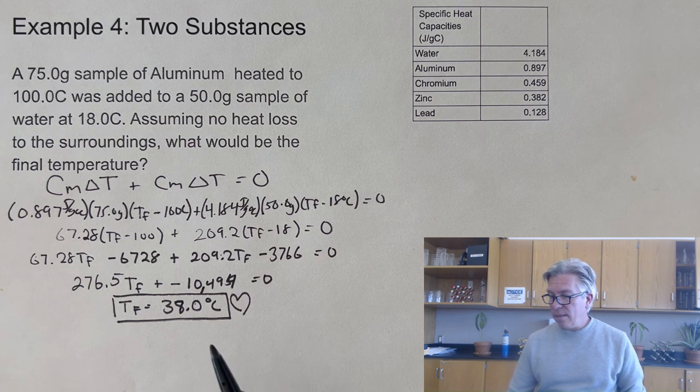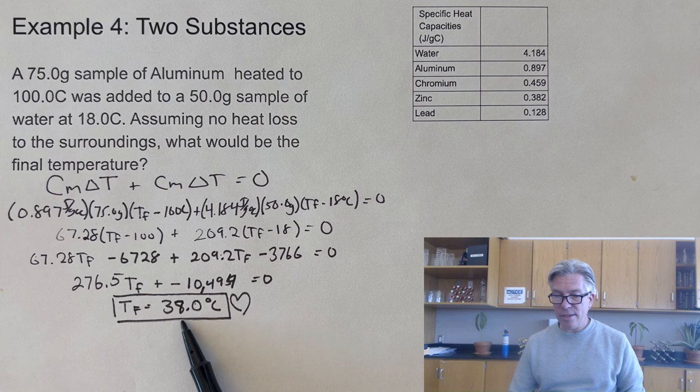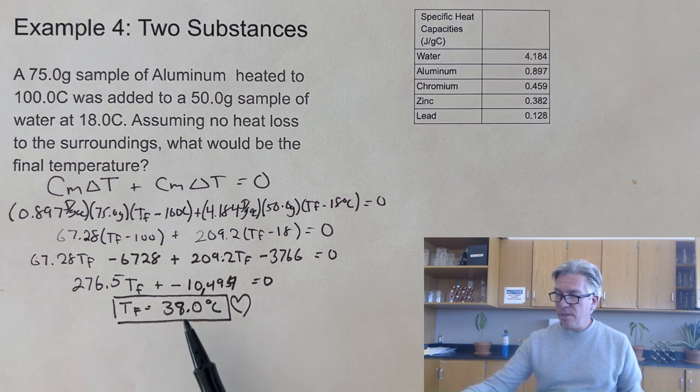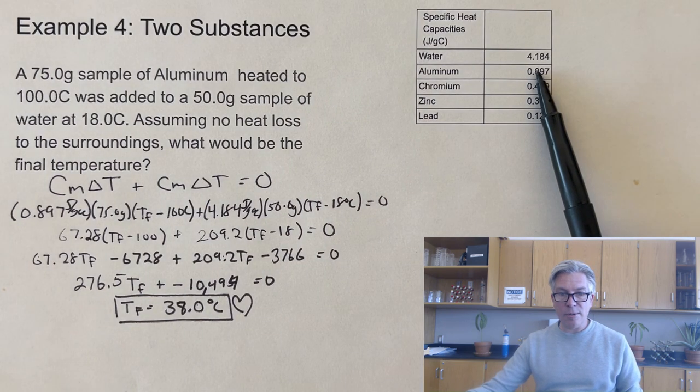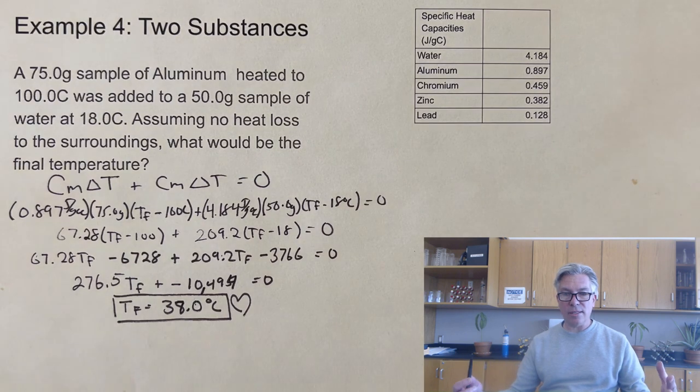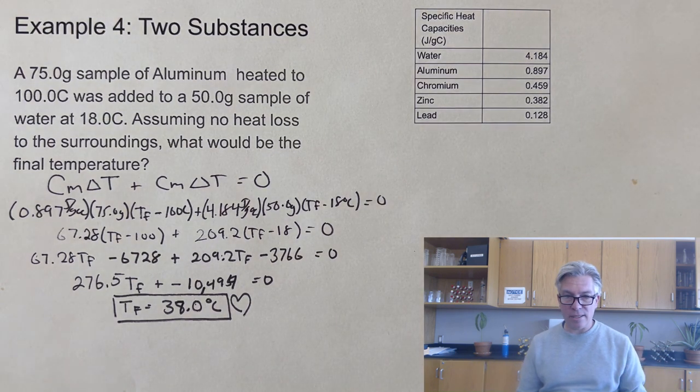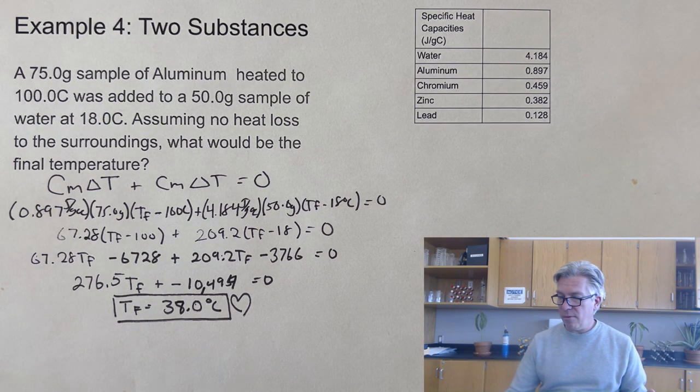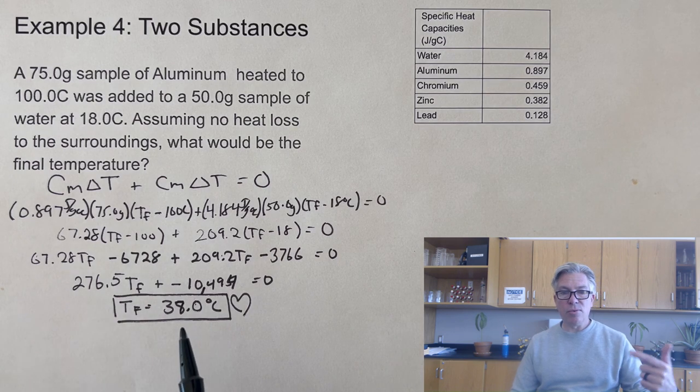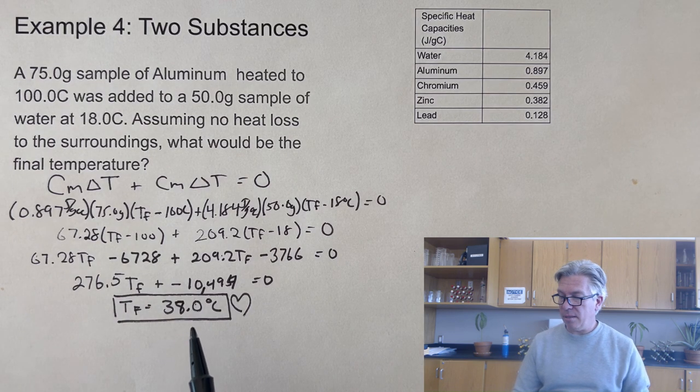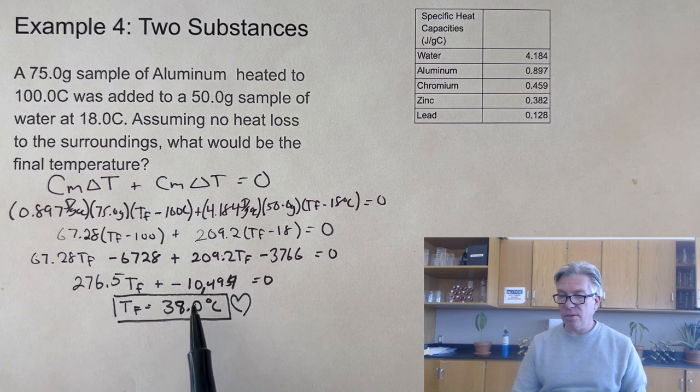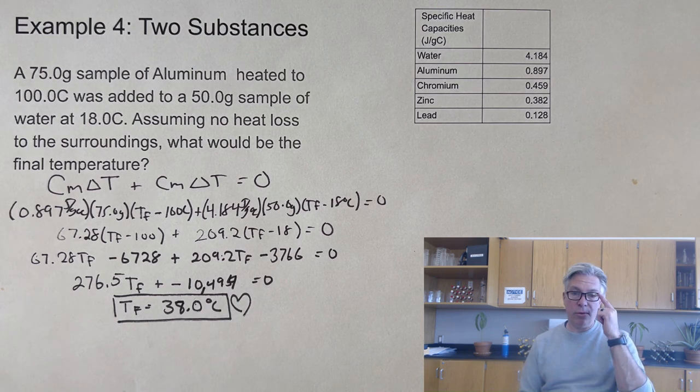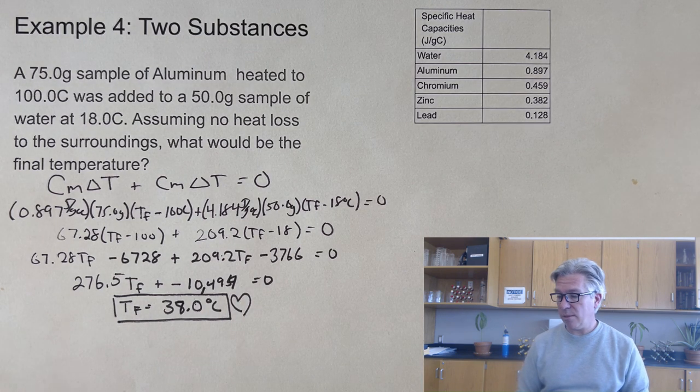This final temperature is higher than the lead one because aluminum has such a higher heat capacity. Here's an overall concept: the higher the heat capacity of a metal, the more it's going to raise the temperature of the water when it's put in there. The lower the heat capacity of the metal, you're going to get a lower temperature change for that water when you're doing your calorimetry experiments.